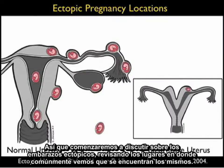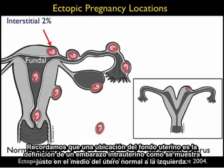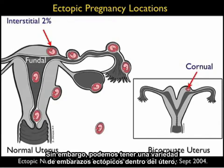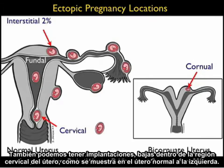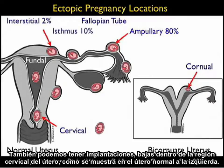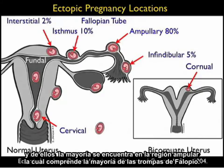Let's begin our discussion of ectopic pregnancies by reviewing the locations where they are commonly found. We see here a normal uterus to the left and a bicornuate uterus to the right. A fundal location is the definition of an intrauterine pregnancy, as shown in the normal uterus to the left. However, we can have variants of ectopic pregnancies within the uterus, such as in the interstitial location in the normal uterus or in the cornual region in the bicornuate uterus. We can also have implantations low within the cervical region. Most ectopic pregnancies will be located within the fallopian tube, and of those, the majority will be found in the ampullary region, as that comprises the majority of the fallopian tube.